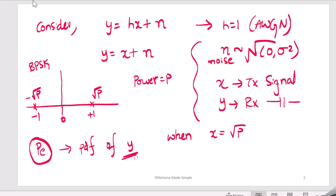But what does PDF of y look like? So let's say when x will be transmitted as square root of P, which is this particular constellation point, then y would become square root of P plus n. So now n is a Gaussian, so your y is also Gaussian.